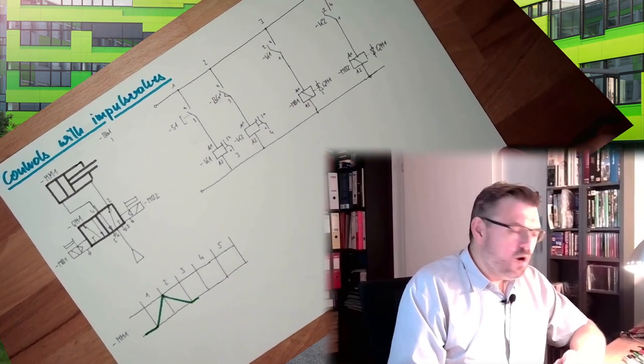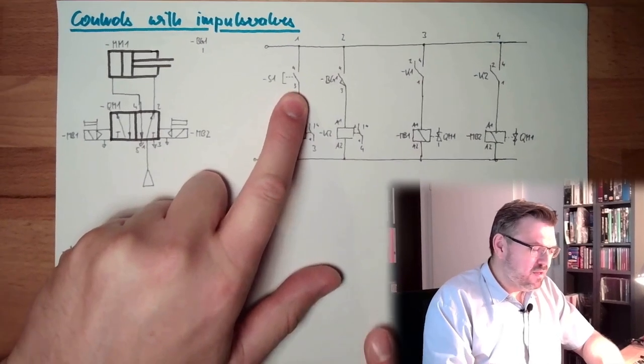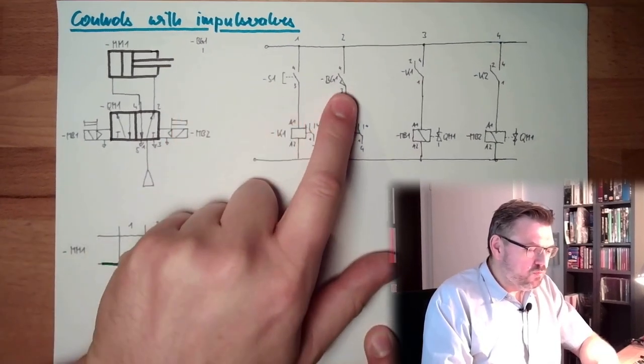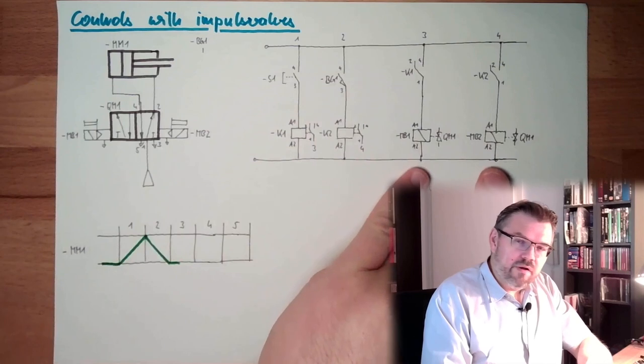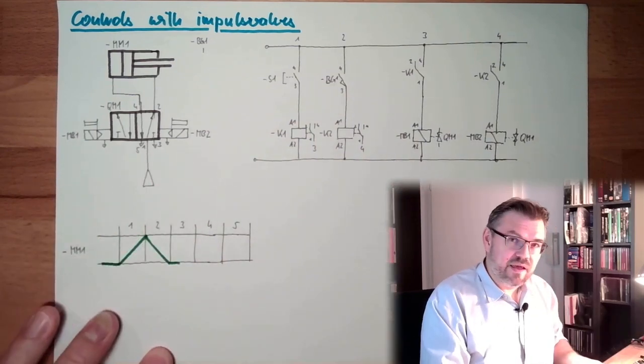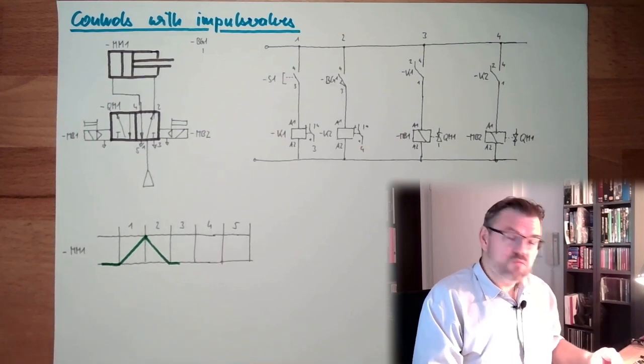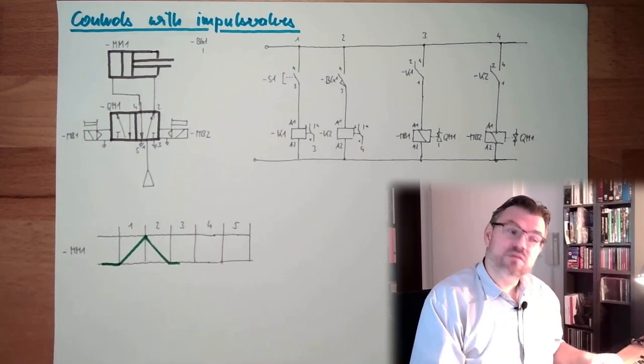And then we said, how is that? If somebody is going to press this button and BG1 is then also pressed, then both coils of our valve would have a signal. And you know, signal overlapping is not a good idea. And I said, next time we're going to have a solution for this.